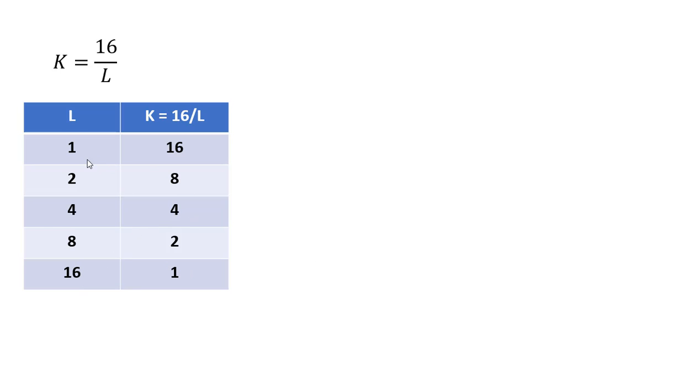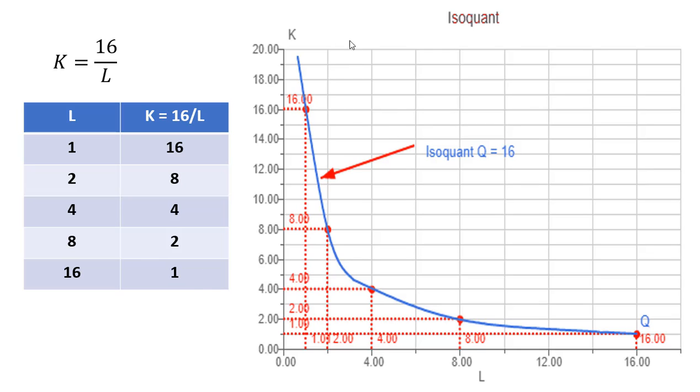Now I'm just going to graph these combinations. We're going to graph our isoquant here. We've got units of capital on the Y or vertical axis, and units of labor being measured on the X or horizontal axis.